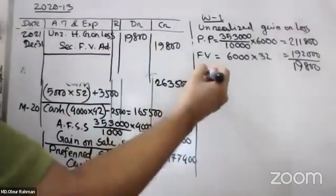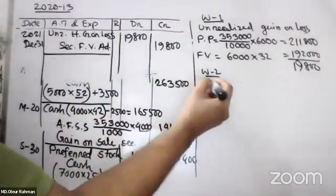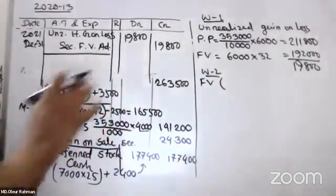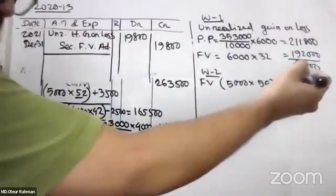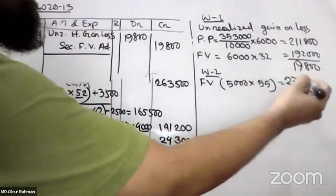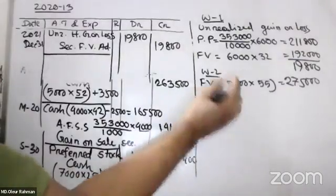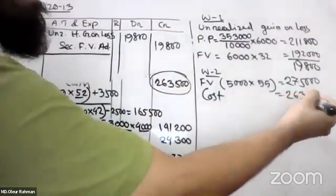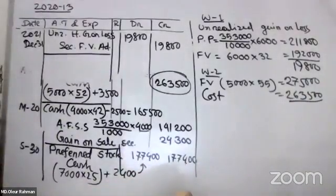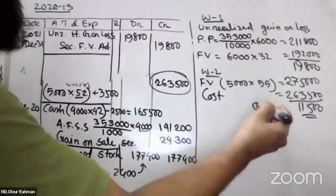Purchase price — the cost price. The cost. The profit, the gain, the loss.